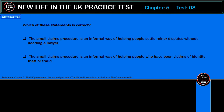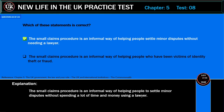Which of these statements is correct? The small claims procedure is an informal way of helping people settle minor disputes without needing a lawyer; or the small claims procedure is an informal way of helping people who have been victims of identity theft or fraud? Correct answer: the small claims procedure is an informal way of helping people settle minor disputes without needing a lawyer. Explanation: The small claims procedure is an informal way of helping people to settle minor disputes without spending a lot of time and money using a lawyer.